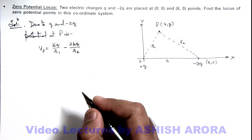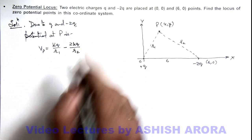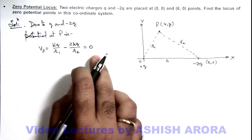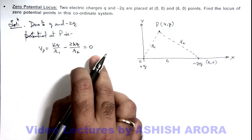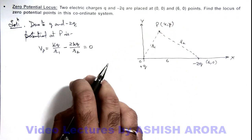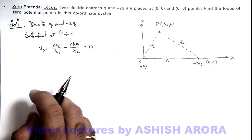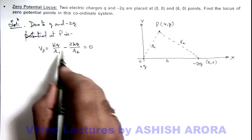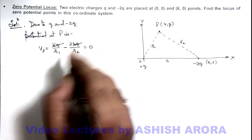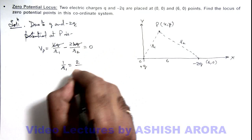As we are required to find the locus of zero potential points, we equate V_P to zero. This gives us a relation among coordinates x and y at which the potential equals zero. You can see kq cancels out, giving us 1 over r1 equals 2 over r2.